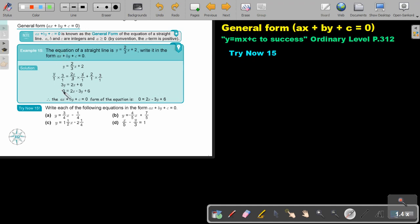Now, let's look at an example. The equation of the straight line is this. Write it in this form. So it's in the y-intercept form, and I want you to write it in the general form. Now, it's actually just, first thing, it's just to get rid of the fractions.